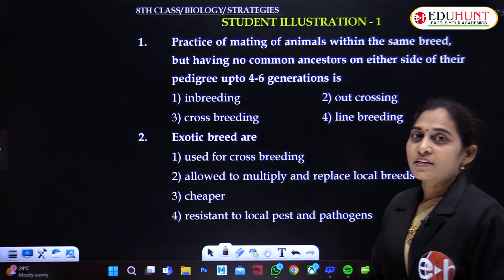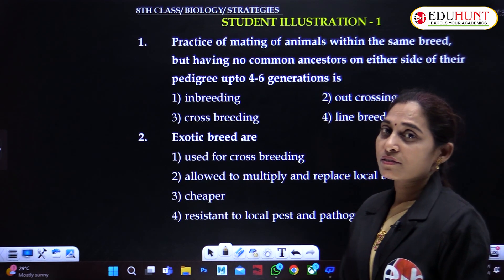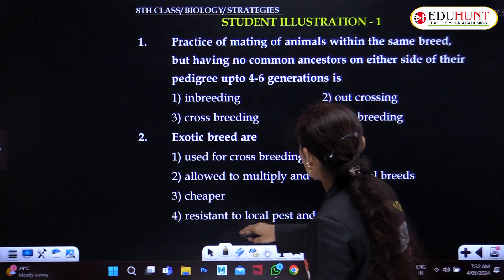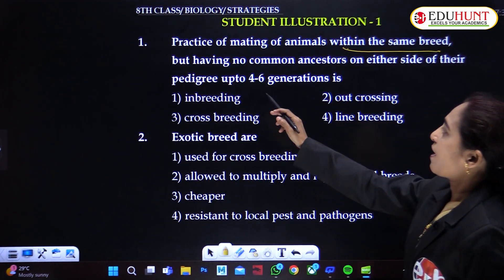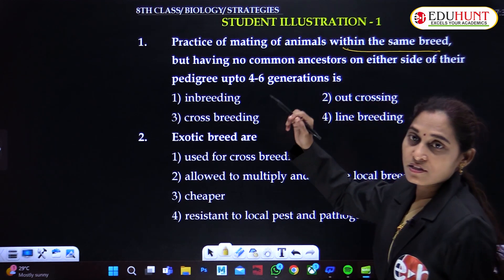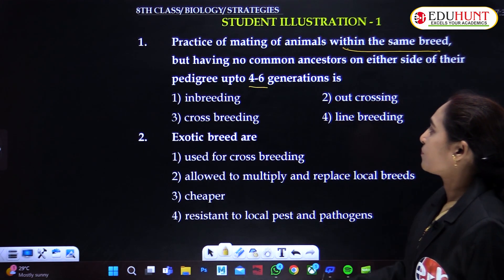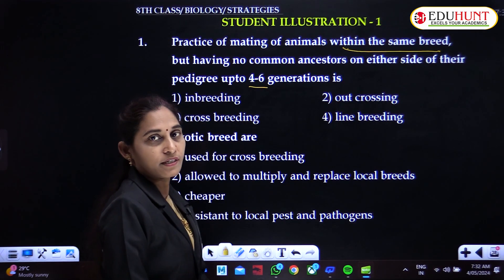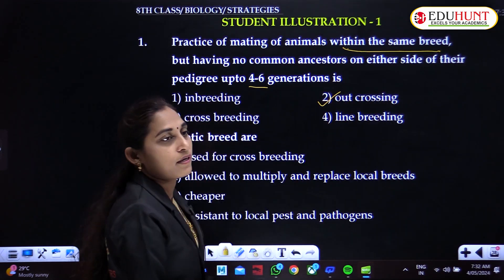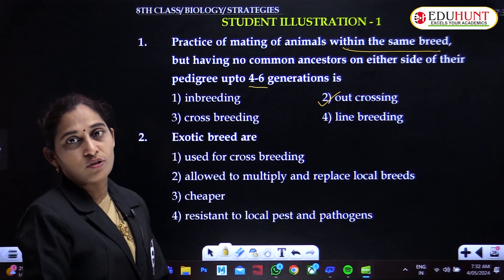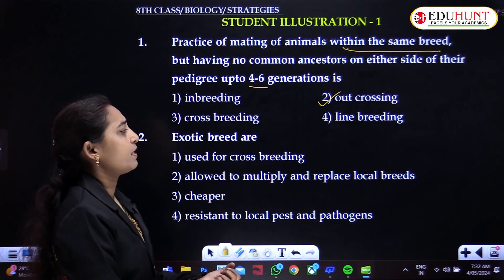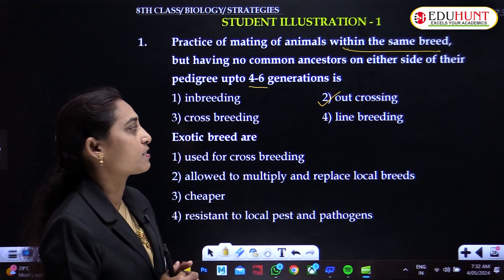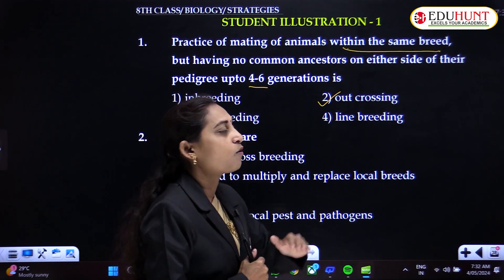First question: The practice of mating animals within the same breed, having no common ancestors for four to six generations, is known as — inbreeding, crossbreeding, outcrossing, or line breeding? The answer is outcrossing, where individuals of the same breed do not share the same ancestor for four to six generations.